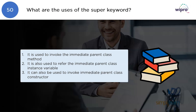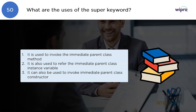What are the uses of the super keyword? The uses of the super keyword are: it is used to invoke the immediate parent class method, it is used to refer to the immediate parent class instance variable, and it can also be used to invoke the immediate parent class constructor.